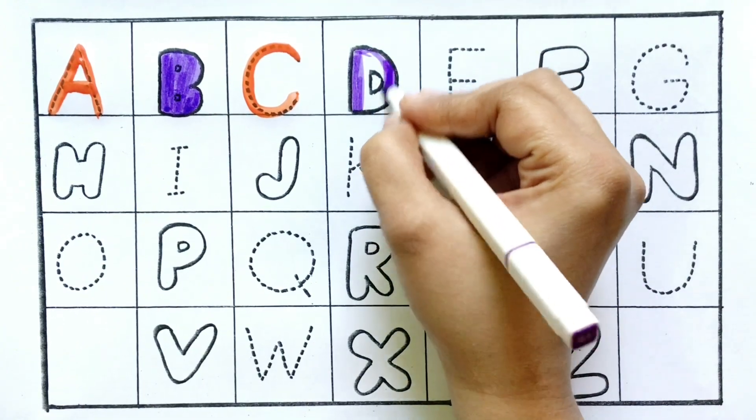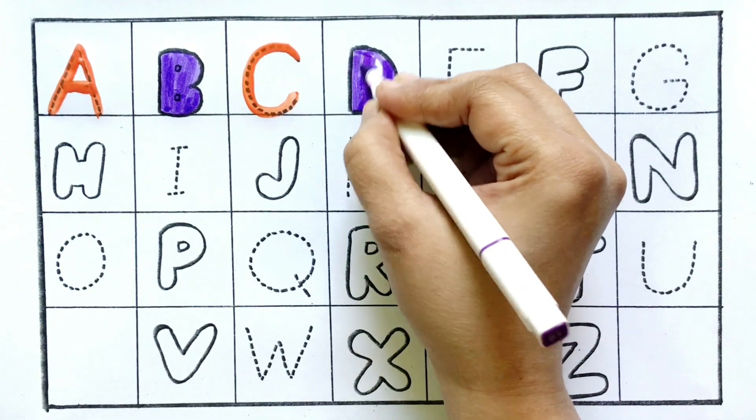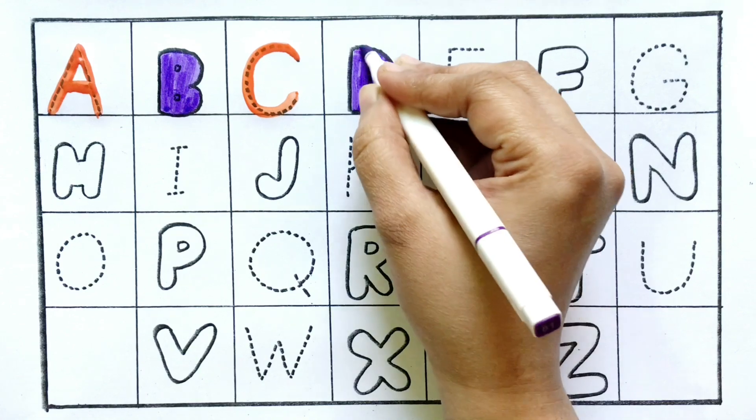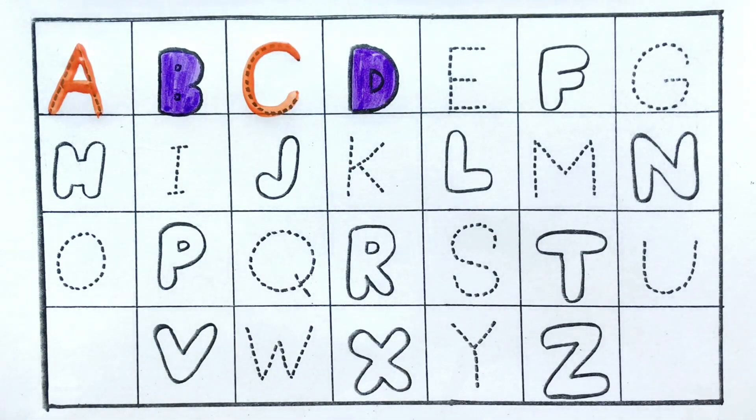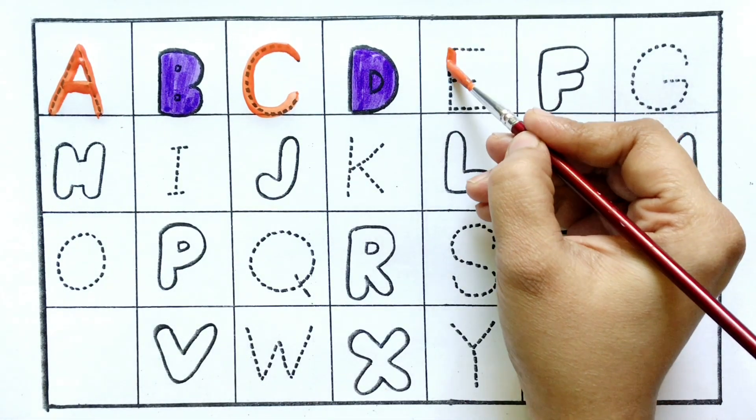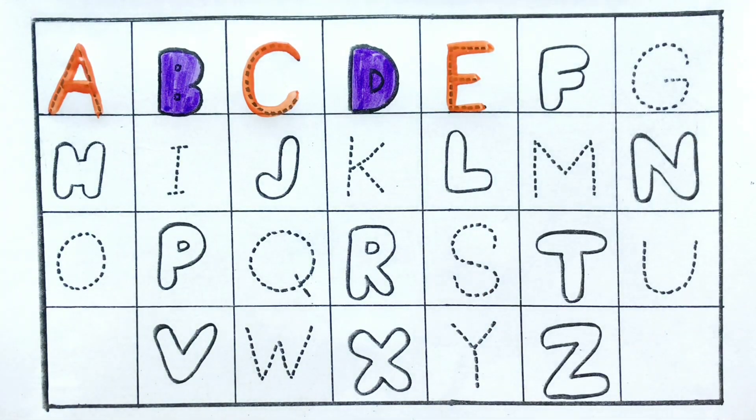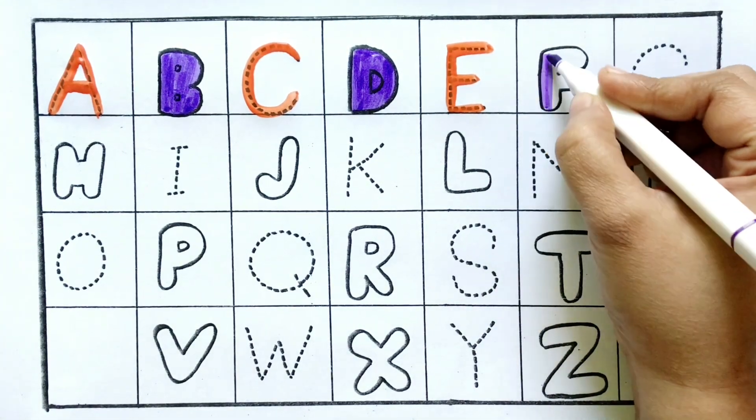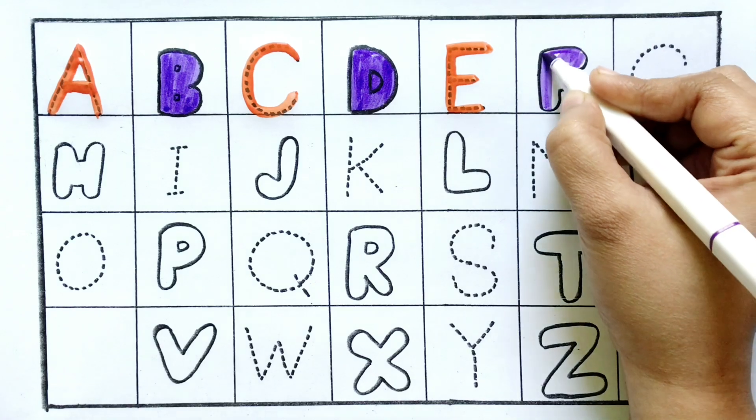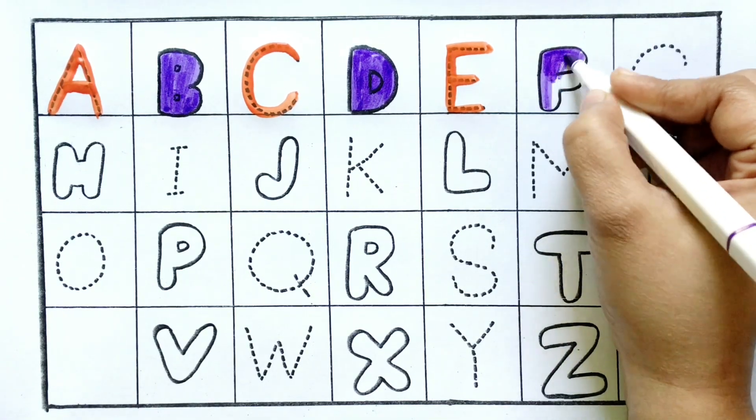D is for Doll. E is for Elephant. F is for Flower.